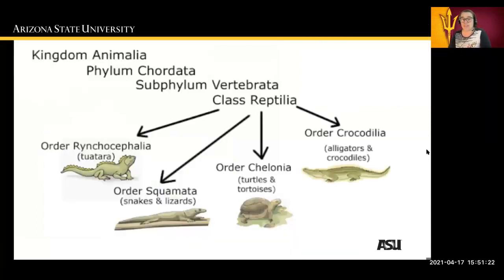When we look at the animal kingdom, we have the phylum Chordata and the subphylum Vertebrata. We go to the class Reptilia, and then we see the orders: the tuatara, squamata — which are snakes and lizards — Chelonia, which is turtles and tortoises, and Crocodilia, which is alligators and crocodiles.